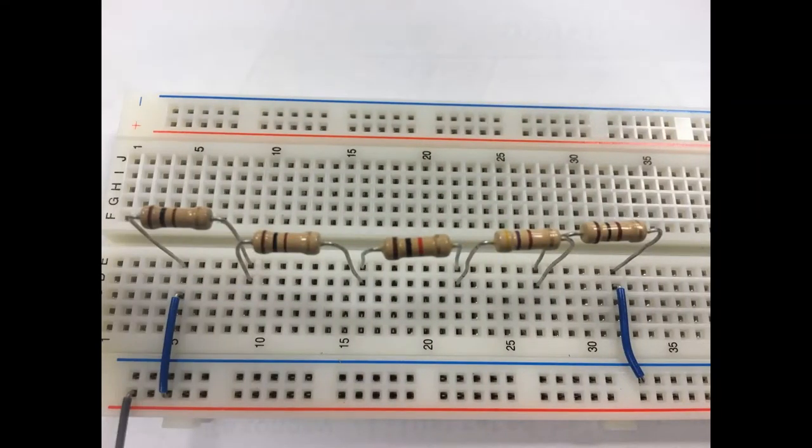Our project was to demonstrate a series resistance circuit with five resistors. As you can see on our breadboard, we have chosen to use three 100 ohm resistors, a 470 ohm resistor, and a 1000 or 1k ohm resistor.